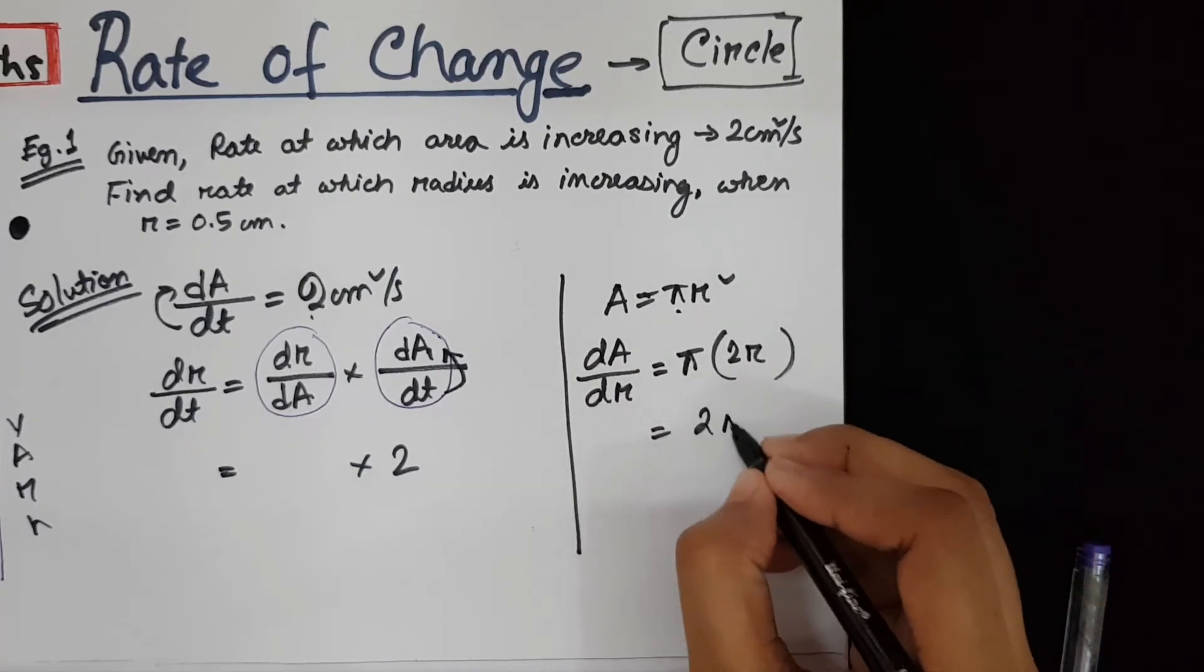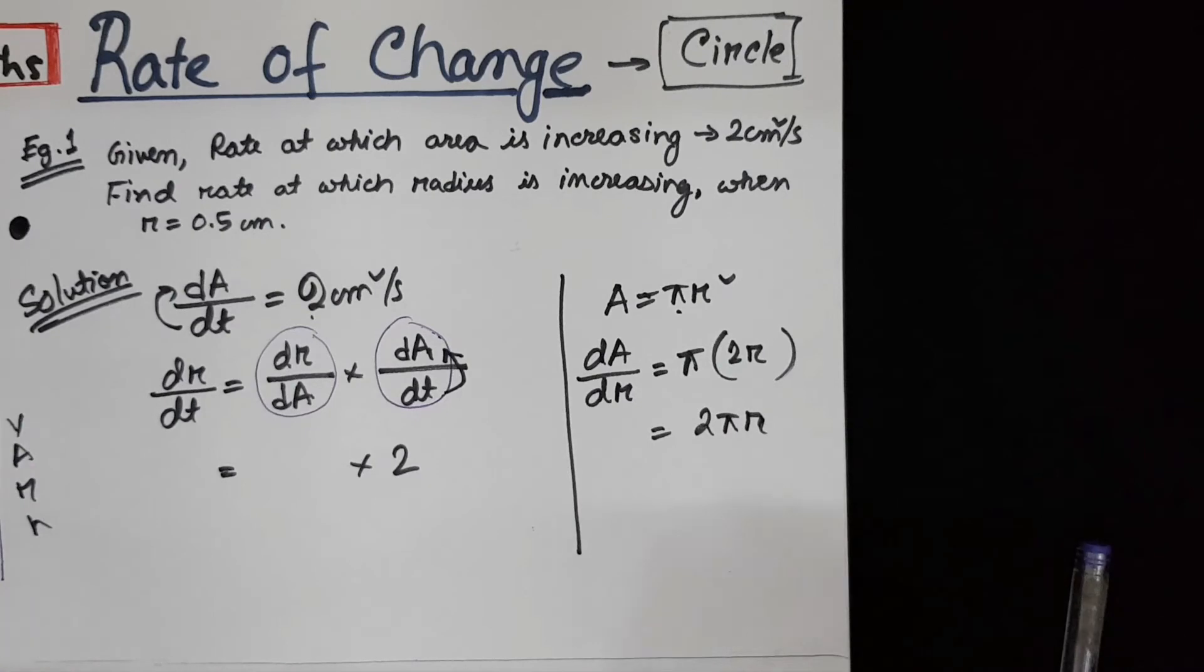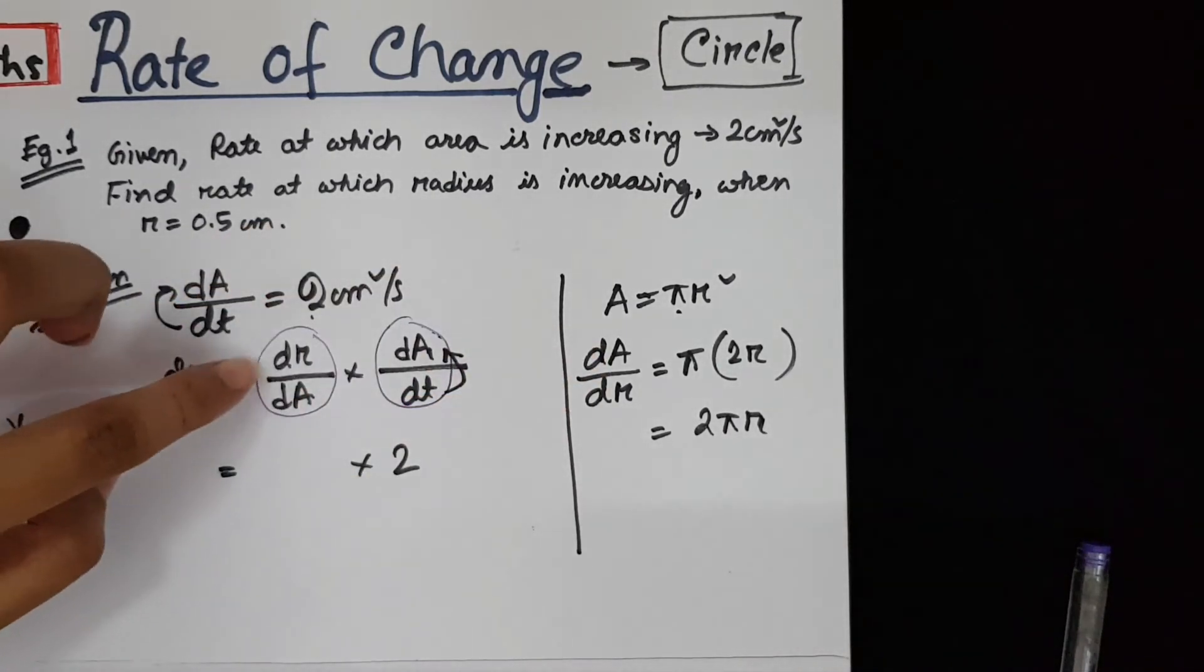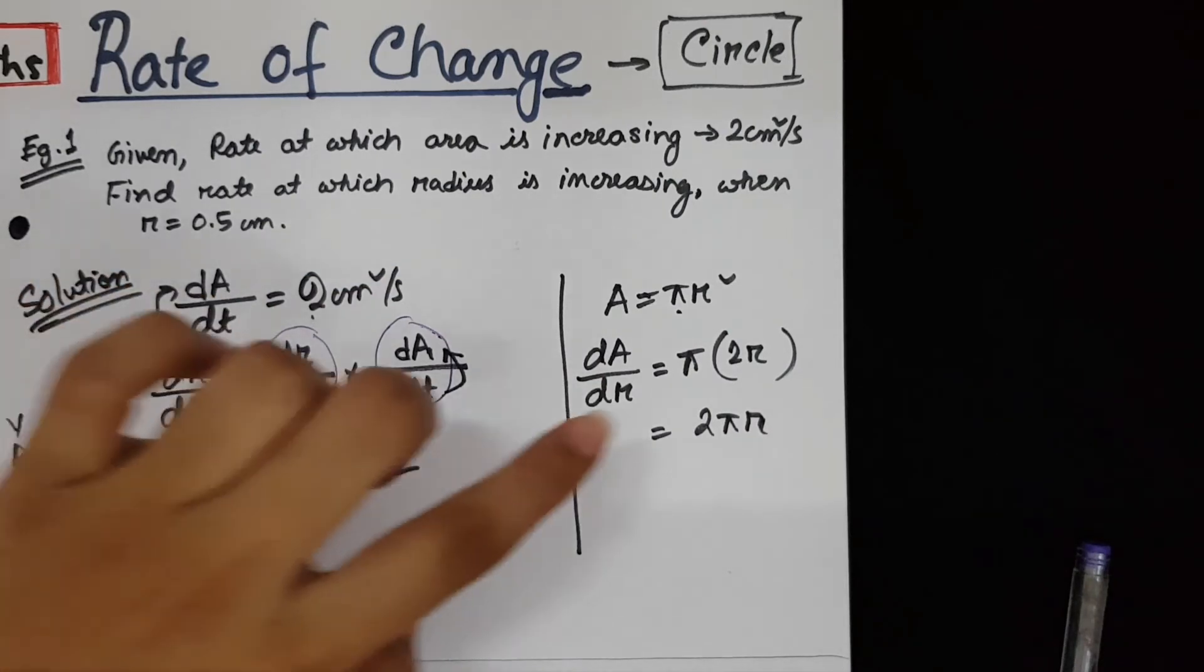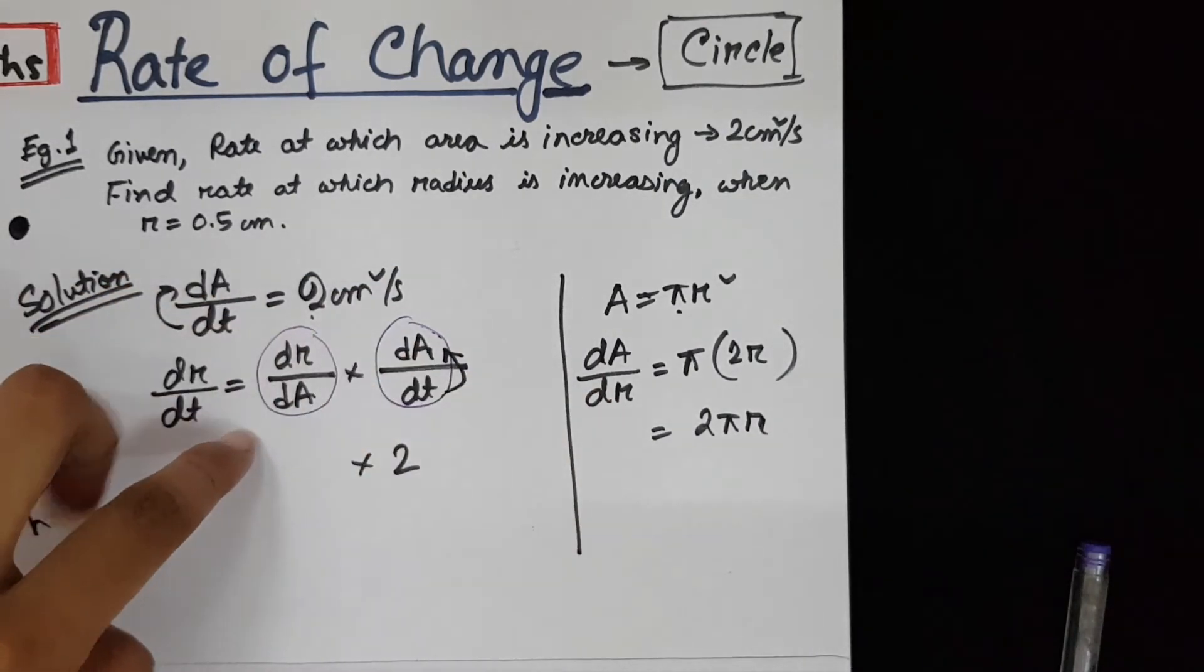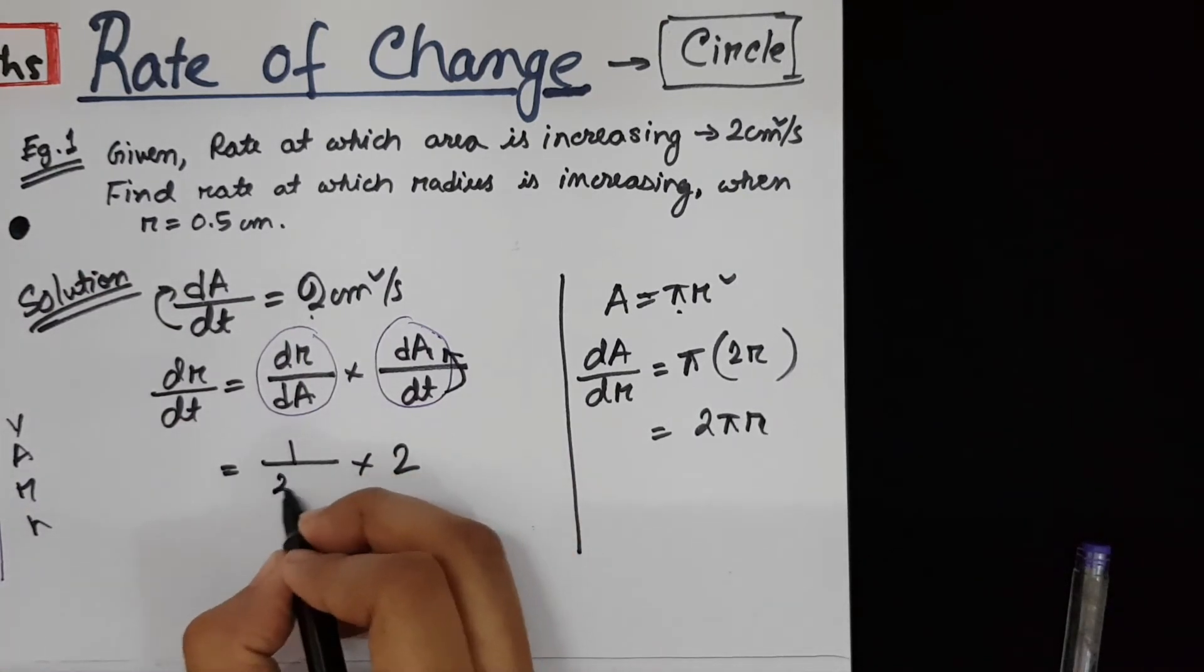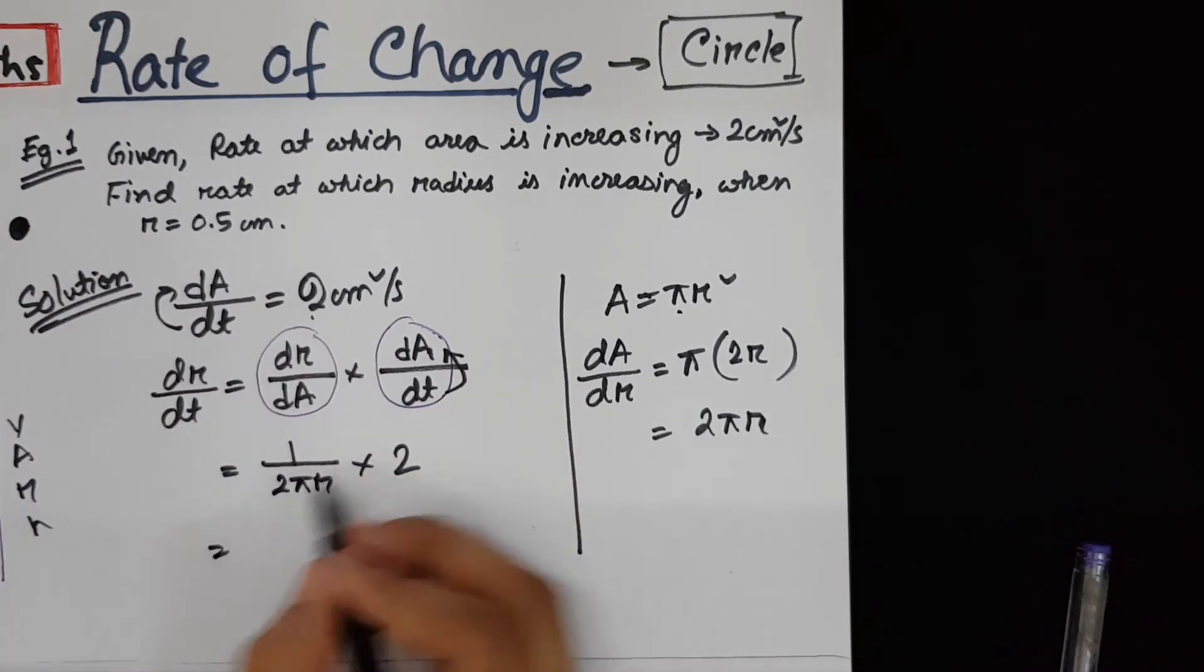r² will become 2r. So the differentiation is 2πr. So this is your value of dA/dr. But we need dr/dA. That is, it's the opposite. So we need to take the reciprocal. So 2πr will become 1 by 2πr. So if we cancel out 2, it becomes πr.